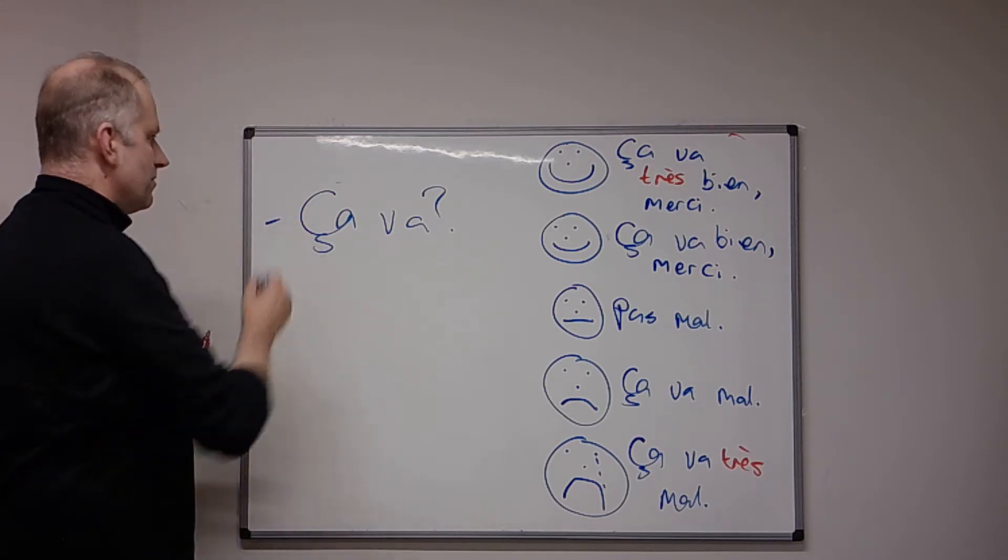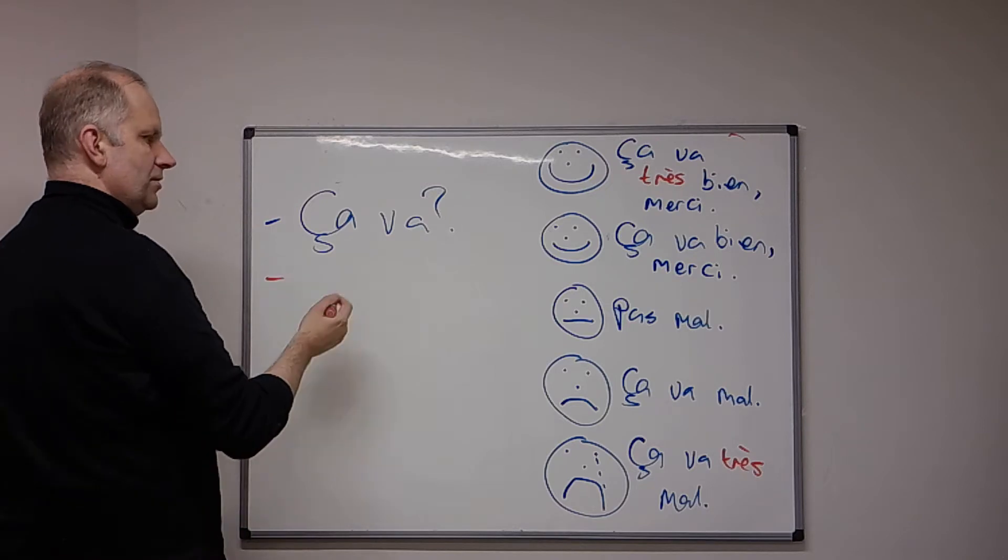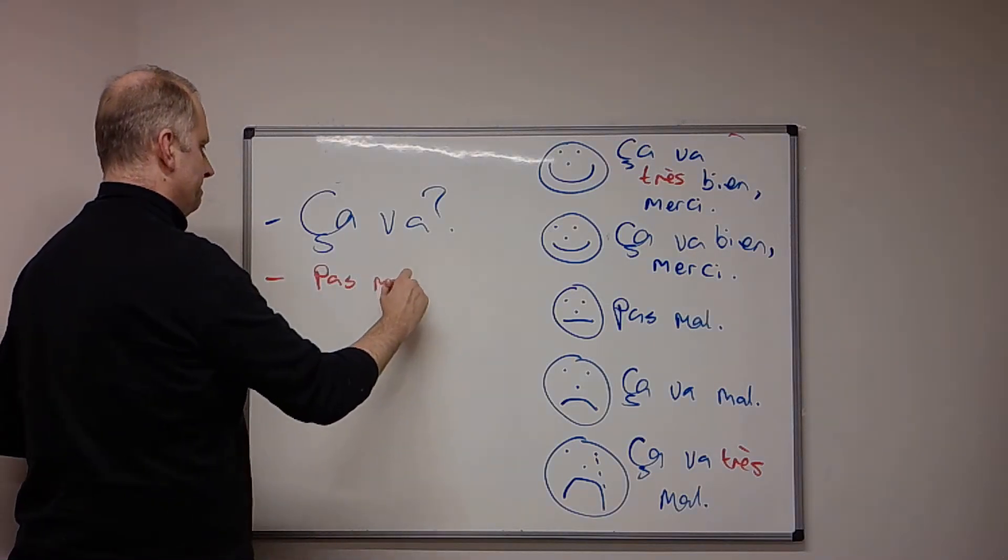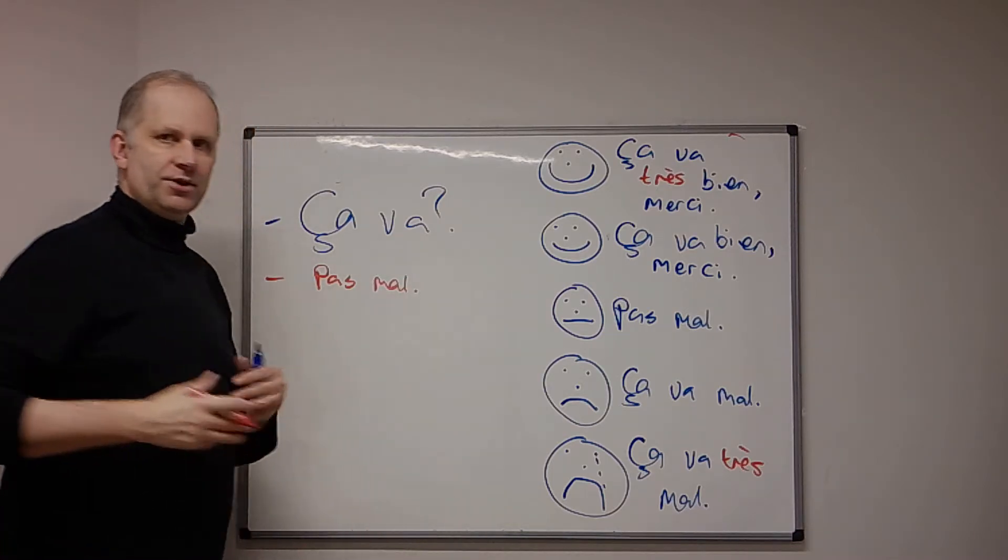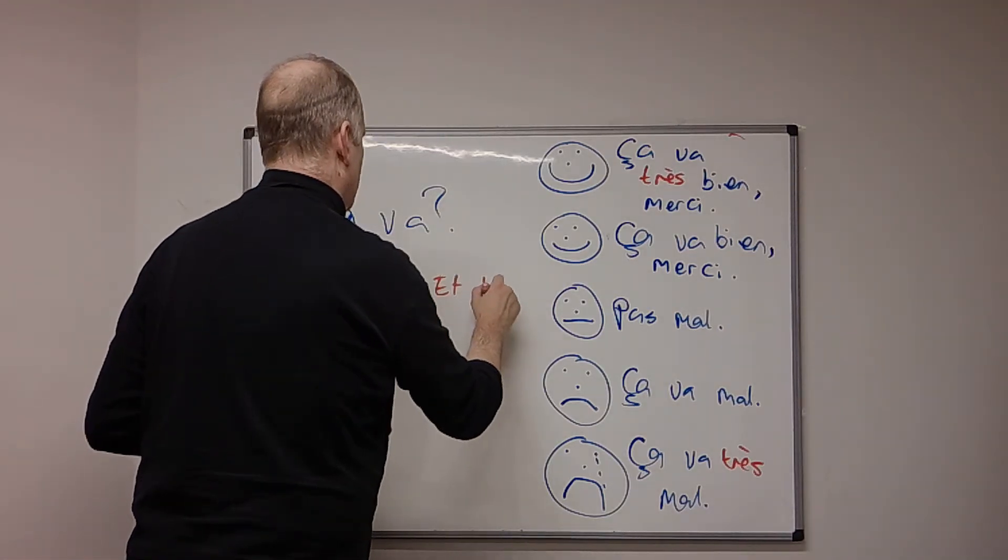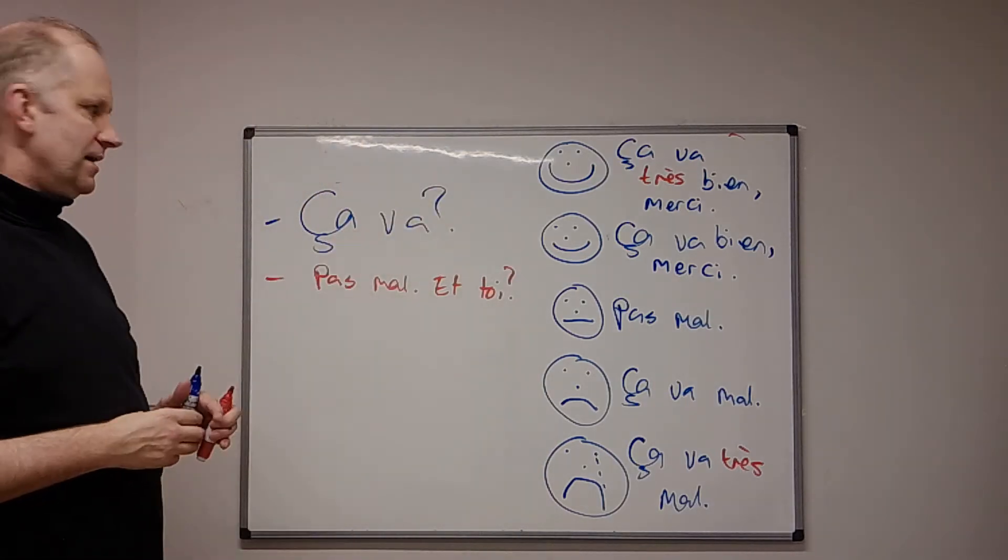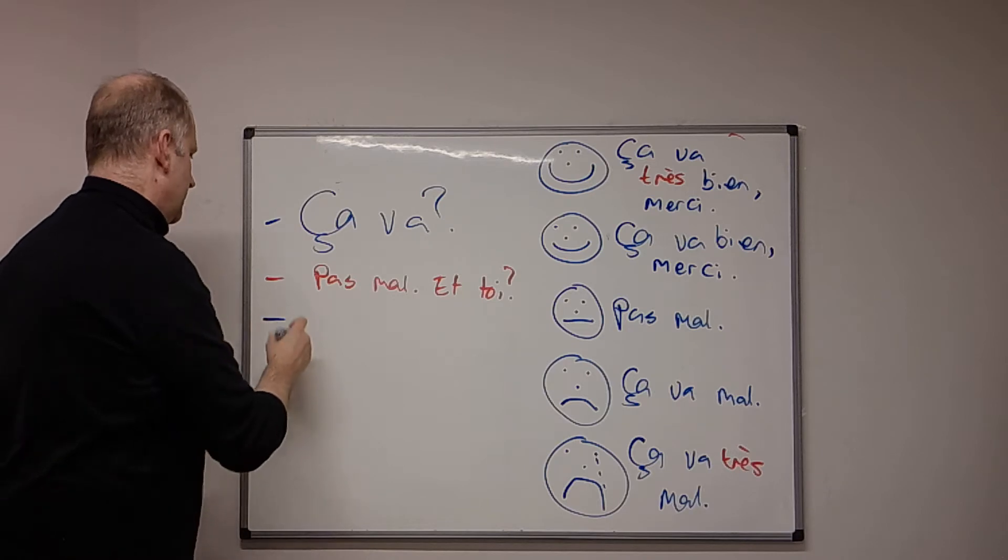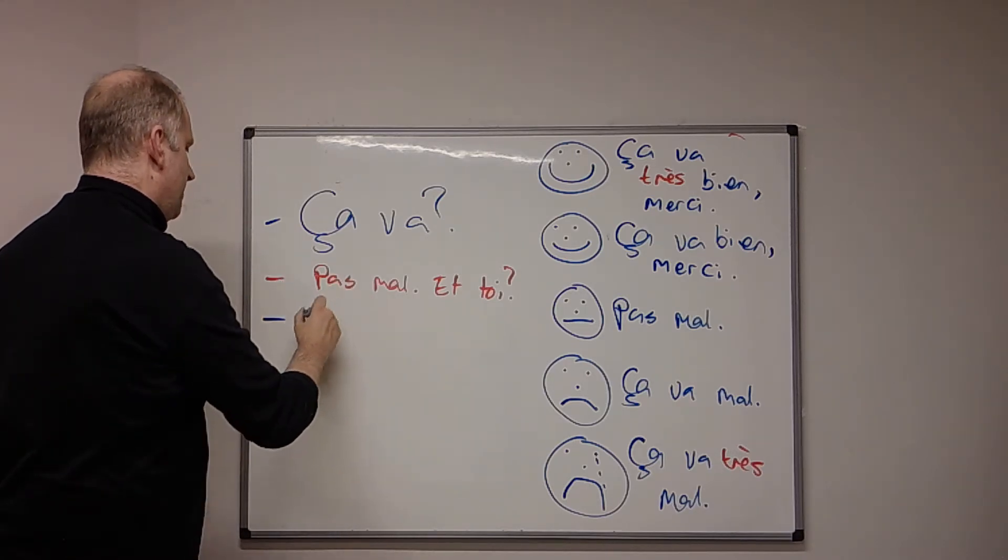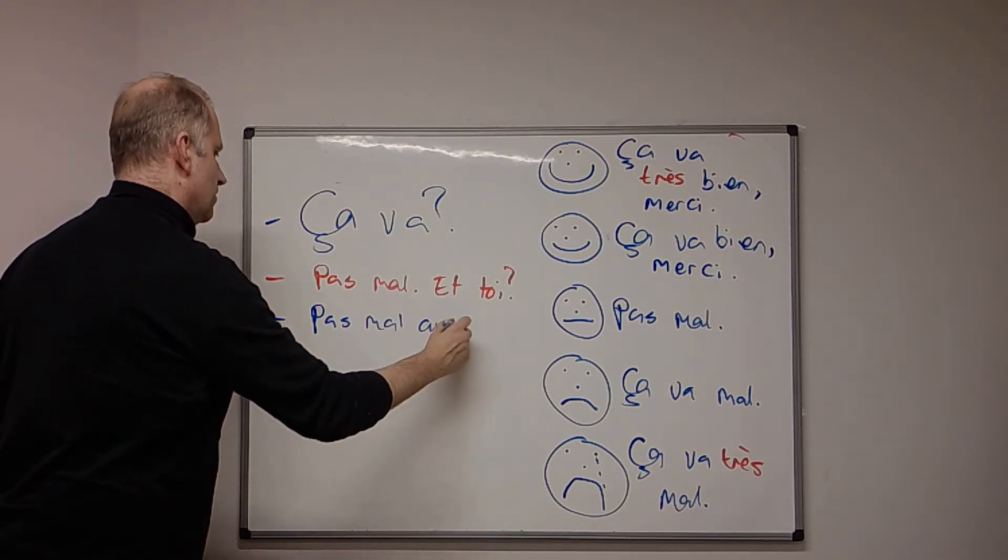So, somebody says to you, ça va, you reply according to how you're feeling. You could say something like, pas mal. And then you could say, and you, so, and you would be, et toi, and then the other person would reply according to how they feel. They might say, they could, if it's the same as the other person, they could say pas mal, aussi, also, but also.